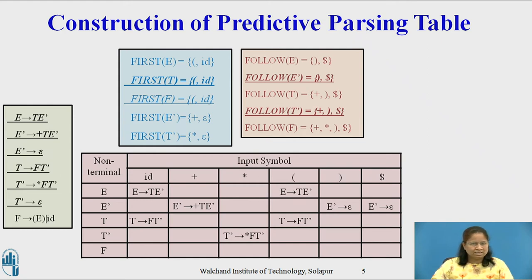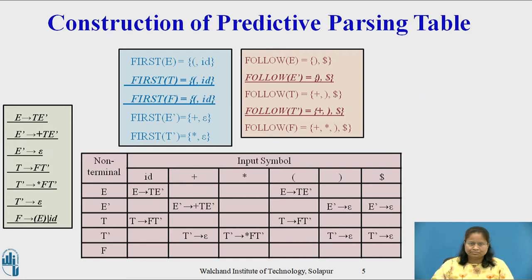Production capital T-dash derives epsilon causes M[capital T-dash, plus], M[capital T-dash, right parenthesis], and M[capital T-dash, dollar] to acquire capital T-dash derives epsilon, since Follow of capital T-dash equals {plus, right parenthesis, dollar}. Since First of capital F equals {left parenthesis, id}, the production capital F derives left parenthesis capital E right parenthesis and capital F derives id, and M[capital F, id] to acquire the entry capital F derives left parenthesis capital E right parenthesis and F derives id respectively.